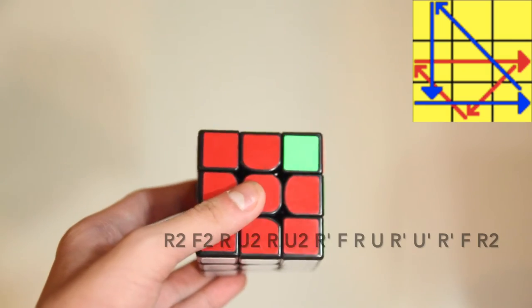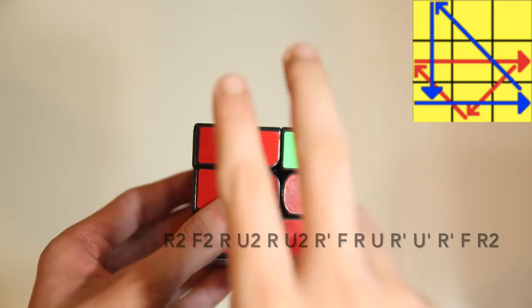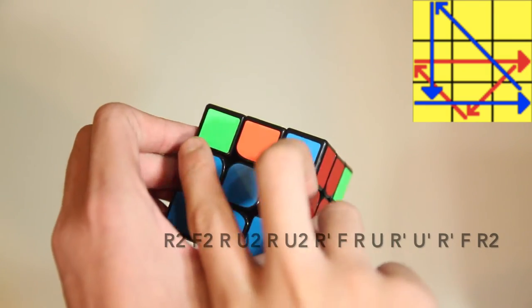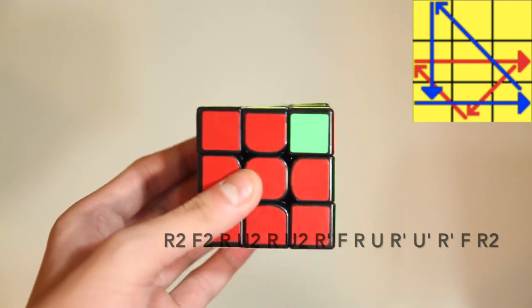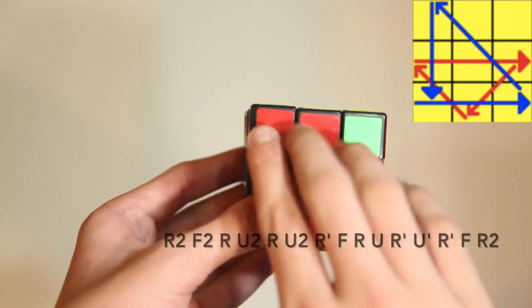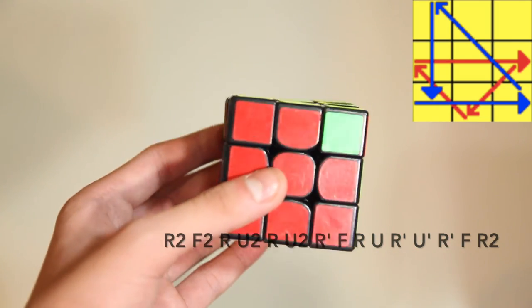This is the G C-perm. It's really nice. So the bar on the left and opposite colors on opposite ends of the cube. So this time you face the block and you do this algorithm.